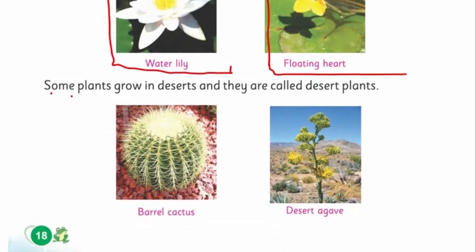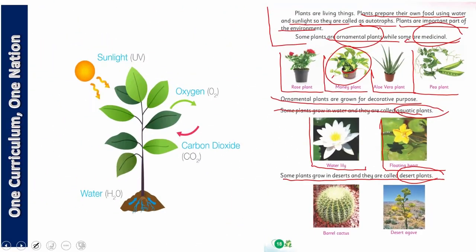Some plants grow in deserts and they are called desert plants. Dear children, you have learned how many types there are. Those plants that like to live in water are called aquatic plants, and those found in deserts are called desert plants, for example barrel cactus and desert agave. These are the plants that grow well in deserts.